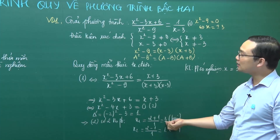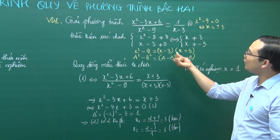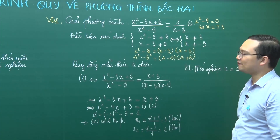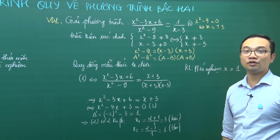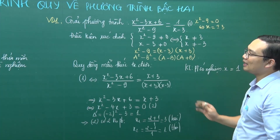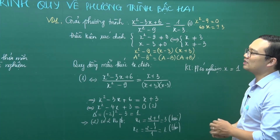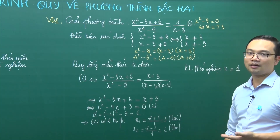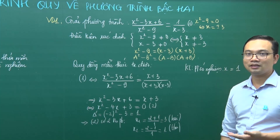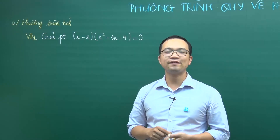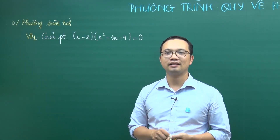X = 3 không thỏa mãn điều kiện vì điều kiện của chúng ta là x phải khác ±3. Kết luận: phương trình có nghiệm x = 1. Đây là cách giải phương trình chứa ẩn ở mẫu thức.